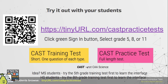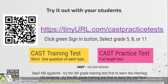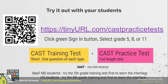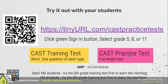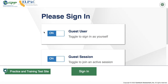As you look through the list, make sure you select the correct grade level, and look for the CAST — not the CAA science test, which is the alternate assessment for students with IEPs and other special needs. One idea to get students extra practice is for middle school teachers to have students try the fifth grade tests, and for high school students to try the middle school CAST training test and practice test so they can see how long a full-length test is.